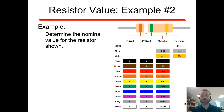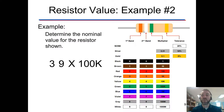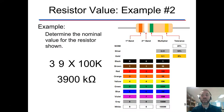Let's try again. The first band is orange, so that's a three. Second band white, that's a nine. Our multiplier is 100k, so we're taking 39 and multiplying by 100k. That gives us 3,900,000 ohms of resistance, which you can simplify down to 3.9 mega-ohms of resistance.